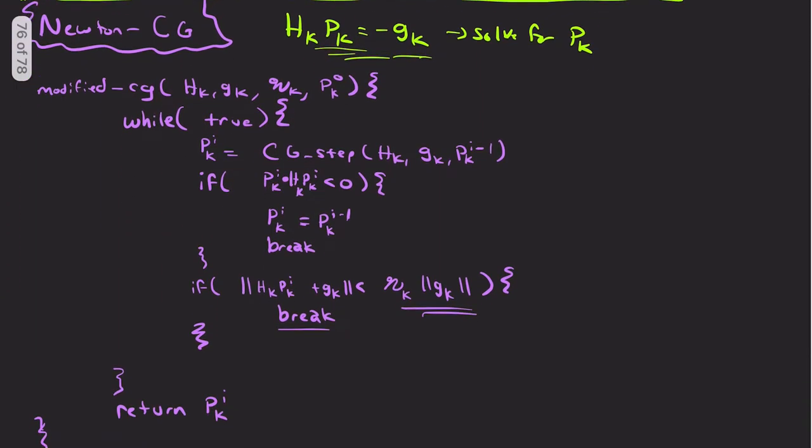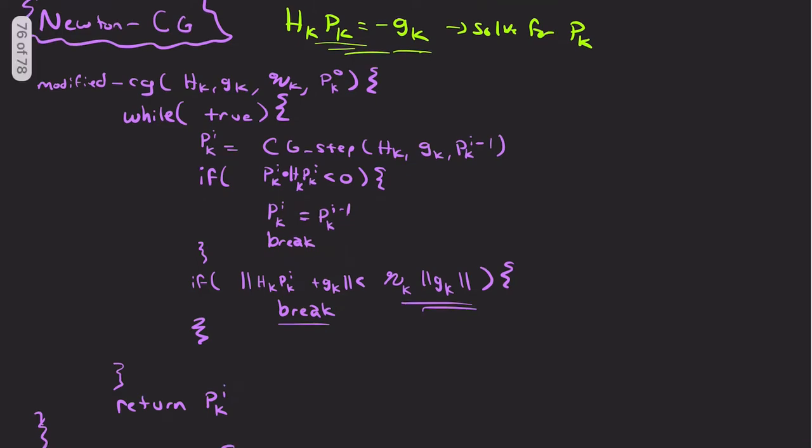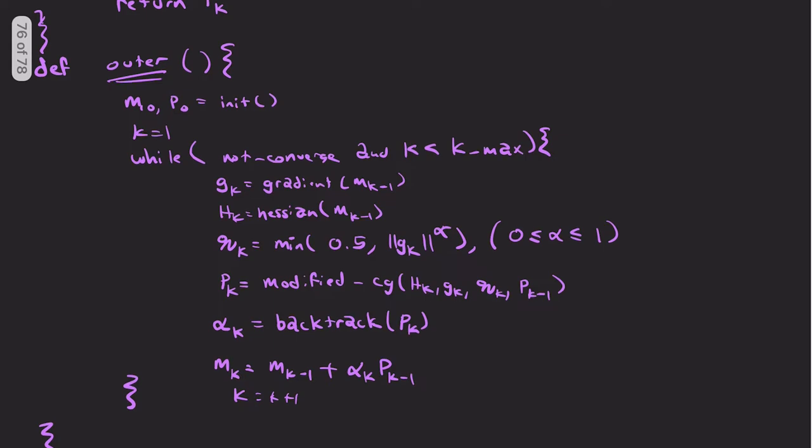So here is the Newton CG algorithm. We're solving for our search direction PK at the kth iteration. And I'm going to go, so we sort of have two loops here that we're going through. So I'll go over the outer loop first. So this is the actual, where I'm iterating in model space, not my search direction PK. So we give an initial model and search direction of the model while we haven't hit some termination condition or a max number of iterations. We get the gradient. We get the Hessian.